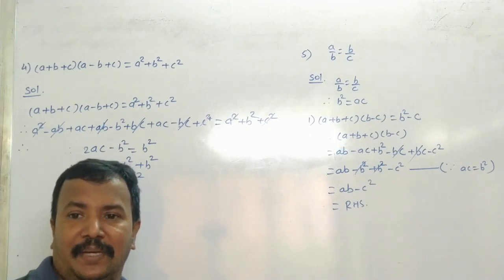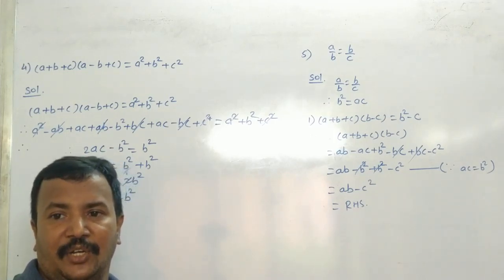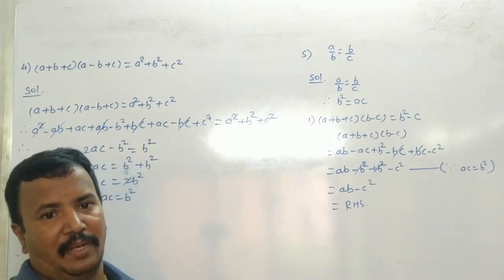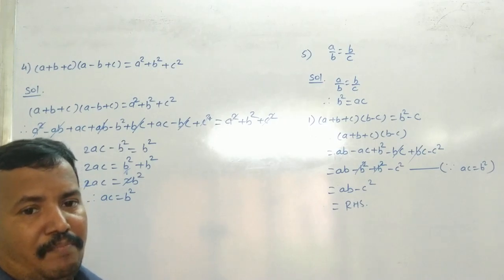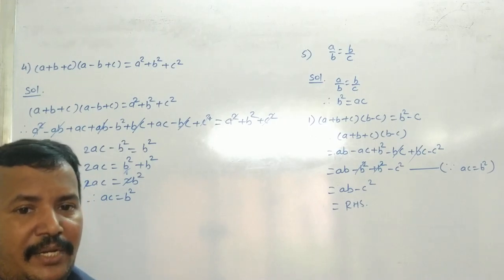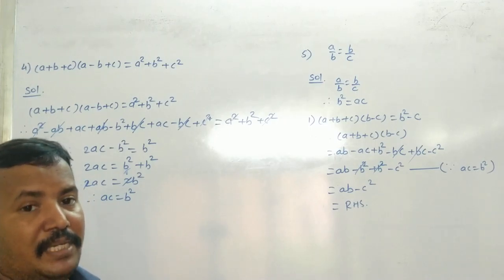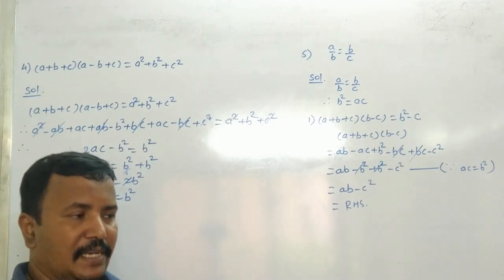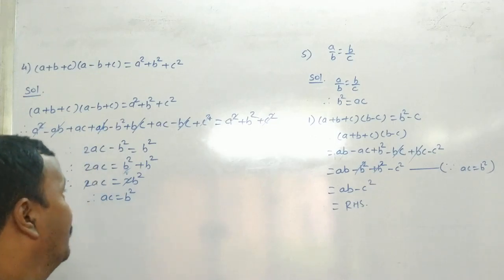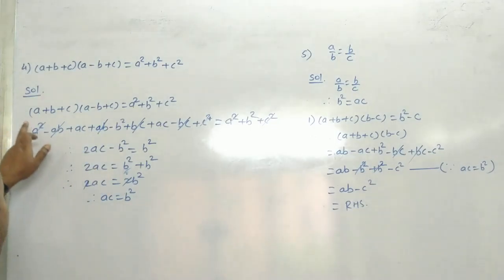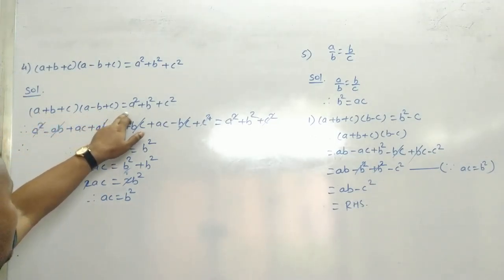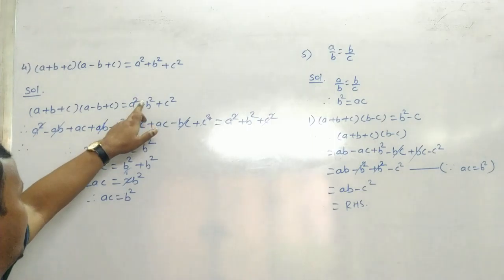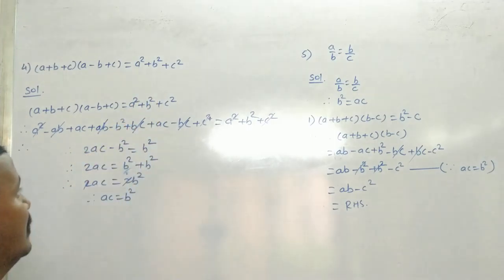हम लोगों को बताना है A, B, C are in continued proportion. मतलब B square is equal to AC, यही हम लोगों को proof करना है। So, see now: A plus B plus C into A minus B plus C is equal to A square plus B square plus C square.